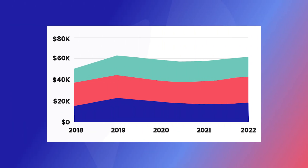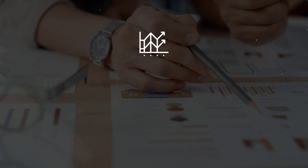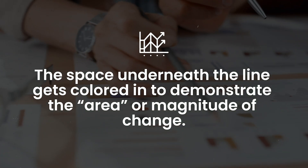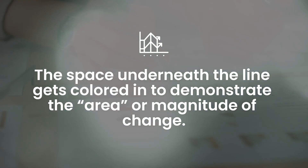Up next is the area chart. You can think of it like a close cousin to the line chart — it also displays financial data over time. But the key difference is the space underneath the line gets colored in to demonstrate the area or magnitude of change. For example, a company reviewing annual profit growth over five years could use an area chart. Shading in the space below the profit line draws attention to the size and scope of rising income levels.